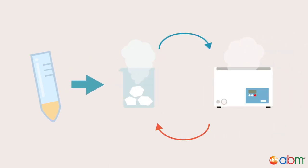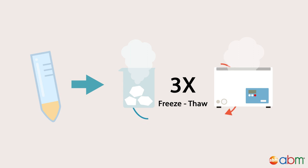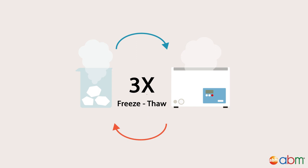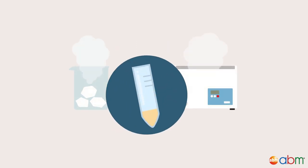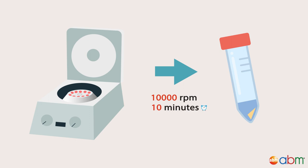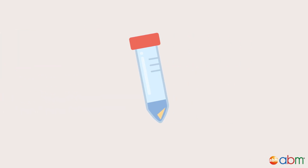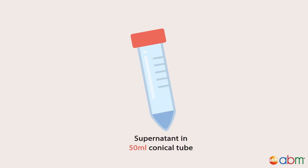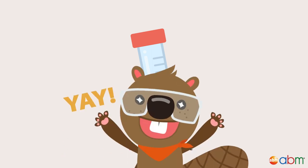Freeze-thaw the cell pellet 3 times by alternating between dry ice and a 37 degrees Celsius water bath. Vortex briefly after each freeze-thaw cycle. The freeze-thaw step will release the adenovirus from the cells into the supernatant. Centrifuge the lysate at 10,000 rpm for 10 minutes and transfer the supernatant into a new 50 ml conical tube. Your supernatant is now ready for virus purification.